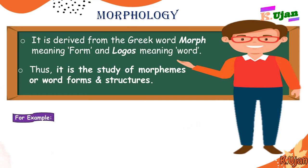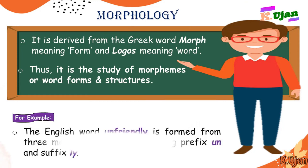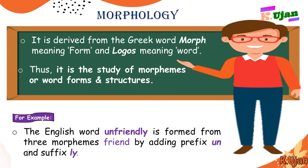These are the key areas which we are supposed to discuss. For example, the English word 'unfriendly' is formed from three morphemes: 'friend', by adding the prefix 'un' and the suffix 'ly'. So the word 'unfriendly' is actually formed of three morphemes — 'friend', 'un', and 'ly'. These forms of a word are known as morphemes in simple terms, and this study is known as morphology in linguistics.